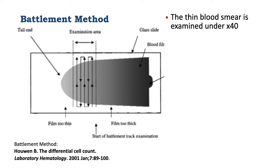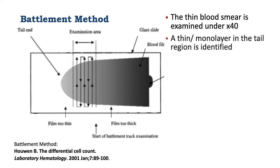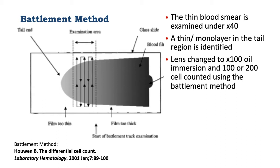The monolayer will be towards the tail of the smear. When a thin or suitable monolayer is identified, change the lens to times 100 or oil immersion and now count 100 or 200 cells using the battlement method.